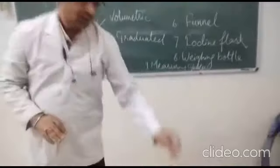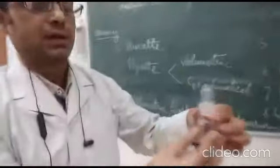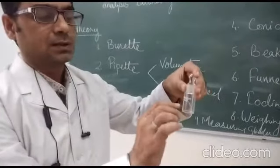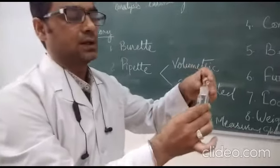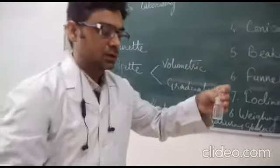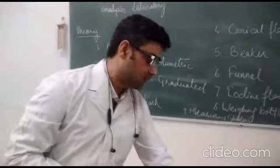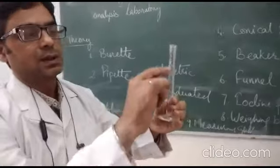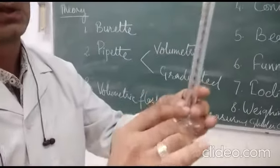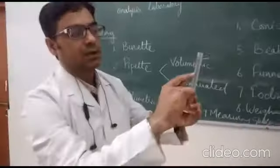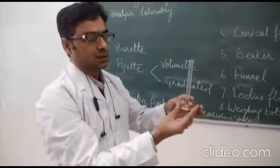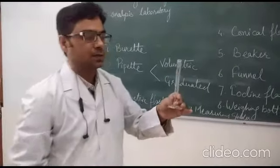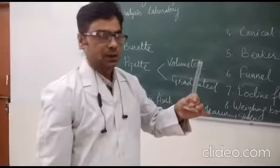Next is the weighing bottle. This is the weighing bottle — it has a lid and a base. We place the compound inside and it is used for weighing the compound. Then we have the measuring cylinder. This is a 10 ml measuring cylinder with graduated marks, used to transfer whatever volume we desire. It is also available in 50 ml and 100 ml sizes.